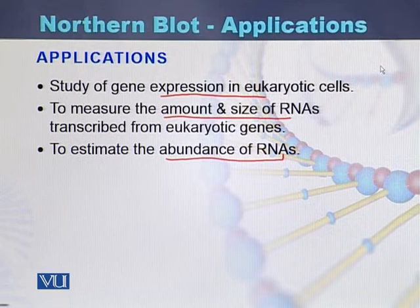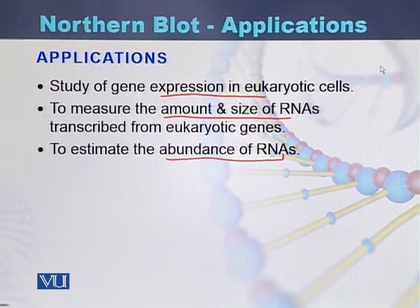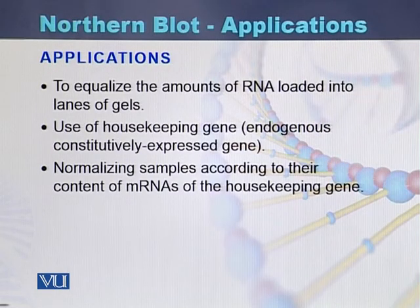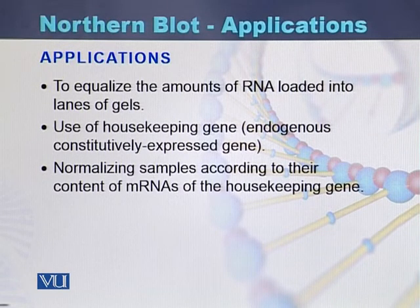Northern blot can help us study gene expression. It can help us check the amount and size of the RNAs, and how much abundance of the RNA is in a particular tissue or cell. Northern blot can also help to equalize the amount of RNA loaded into the lanes of the gel, through the use of housekeeping genes and normalizing samples according to their content of messenger RNA.